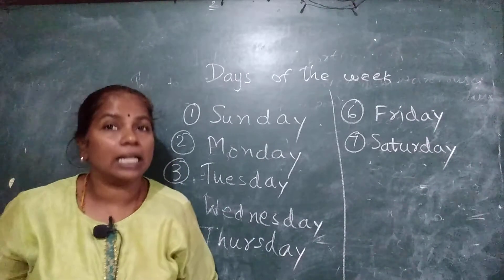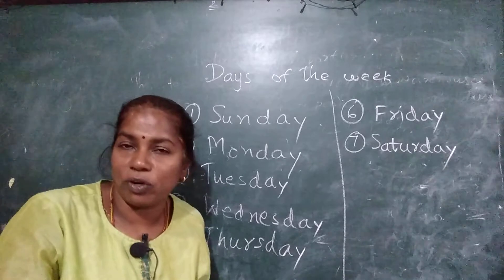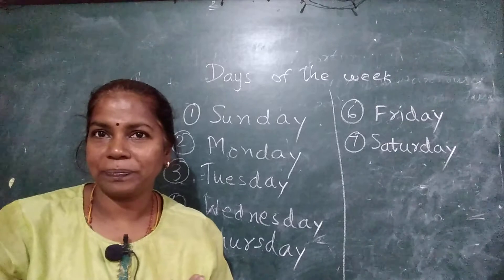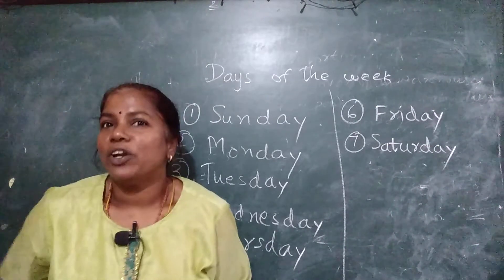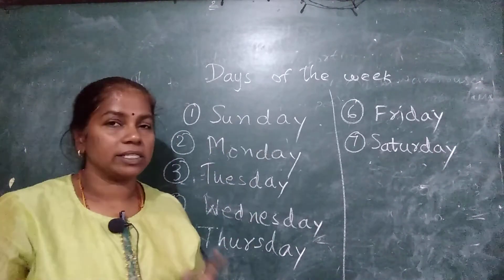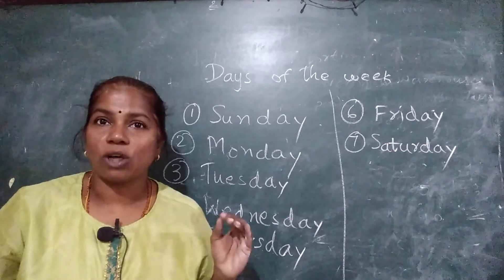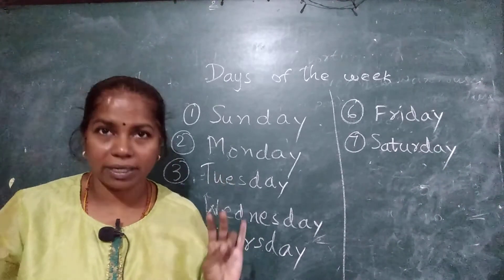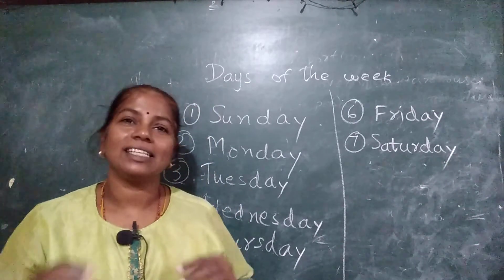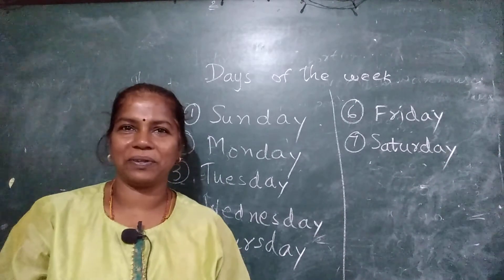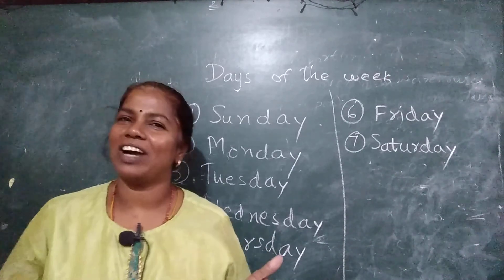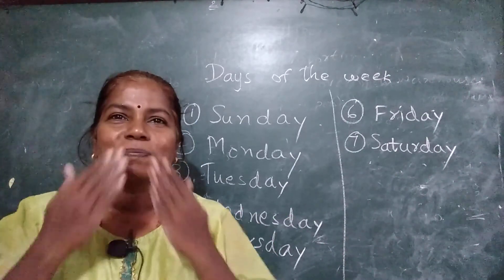What did we do today? Days of the week. We saw what comes before a particular day, what comes after a particular day, and what comes in between. When do you have holidays? On Sunday. Very good. Now let me revise once again: Sunday, Monday, Tuesday, Wednesday, Thursday, Friday, Saturday. Very nice, very good. Keep practicing and repeating this. Write this in your book also. Take care. Love you children.